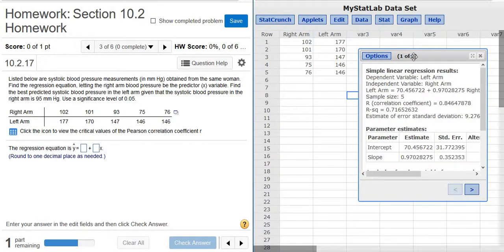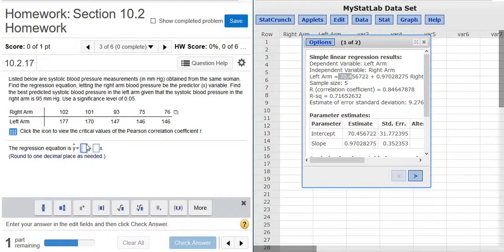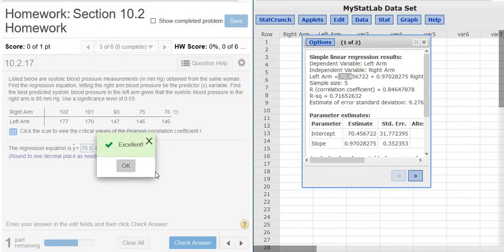So it looks like the left arm is the Y value. Then we have an equals, so it wants one decimal, so 70.5. And then it wants one decimal here, so 0.97. That's going to round to 1. Kind of a weird rounding, but excellent.